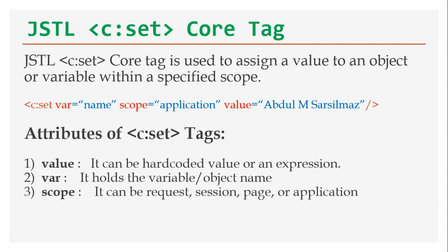In this session I am going to discuss the JSTL c:set tag. The c:set tag is used to assign a value to an object or a variable within a specified scope. In this syntax I am using the c:set tag with the attributes var, scope, and value. This tag will assign the value 'Abdul M Sar Silmaz' to a variable in the given scope — here using application scope, which means the value will be available across any page in a single JSP application.